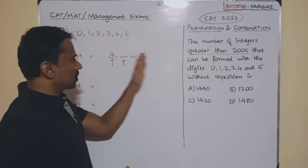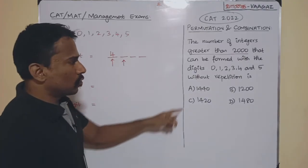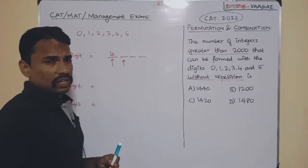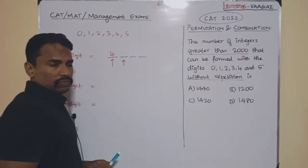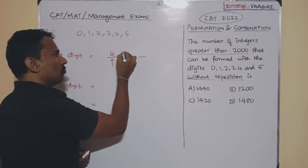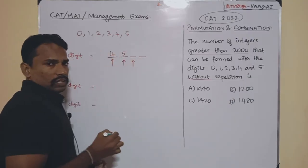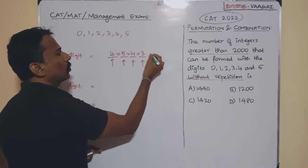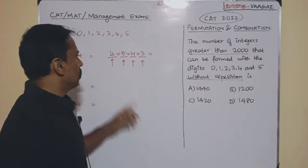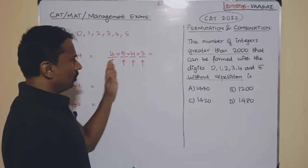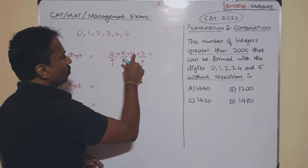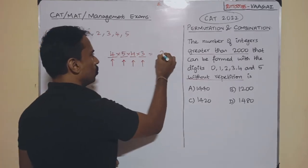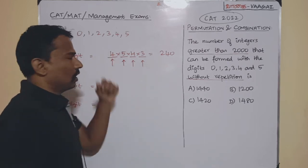For the remaining slots there is no further restriction except no repetition. After filling the first slot, 5 digits remain, so the second slot has 5 ways, the third has 4 ways, and the fourth has 3 ways. Total four-digit numbers = 4 × 5 × 4 × 3 = 240.